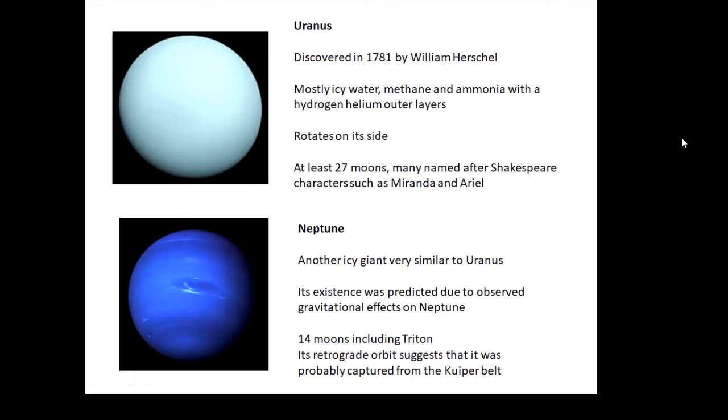It has 14 moons including Triton. Triton is interesting—it has a backwards orbit, which suggests that it was probably a captured Kuiper belt object, as Neptune is not far away from the Kuiper belt.